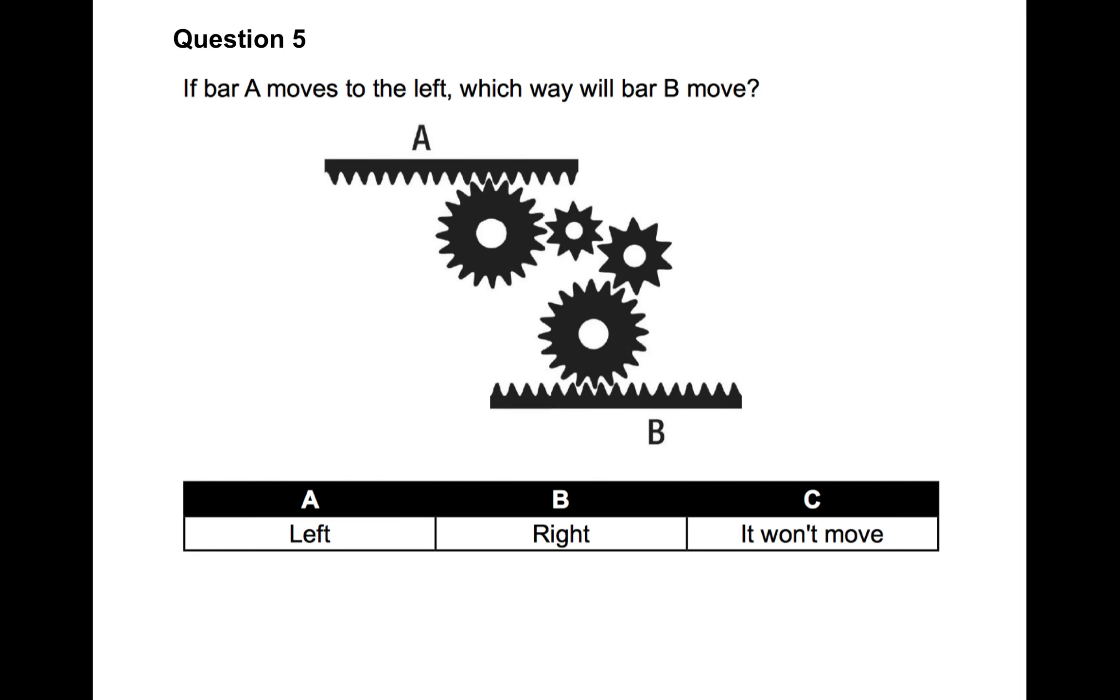Let's go back to the question. So if bar A moves to the left, which way will bar B move? So bar A is moving to the left, which means that also, if you think of it in your mind, that large cog first directly underneath the teeth of bar A will also move to the left. The one to the right of it would therefore move clockwise. The one to the right of the smallest one would be anticlockwise. And the one at the bottom would move clockwise, which would mean that bar B would move to the left also, the same as A.